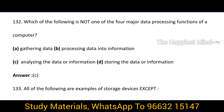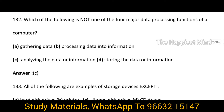Question 132: Which of the following is not one of the four major data processing functions of a computer? It is option C: Analyzing the data or information. So analyzing the data or information is not one of the four major data processing functions of a computer.